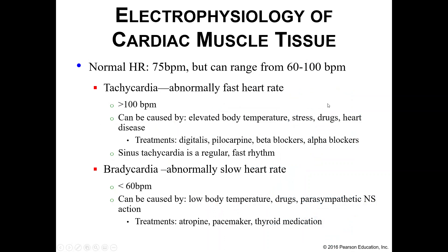Normal heart rate is approximately 70 to 75 beats per minute, though it can range from about 60 to 100. If you get above 100 beats per minute, you are experiencing tachycardia — a really fast heart rate. Causes include elevated body temperature, stress, sympathetic nervous system activation, certain drugs both legal and less legal, and heart disease. Medications such as digitalis, pilocarpine, beta blockers, and alpha blockers are designed to lower your heart rate. Sinus tachycardia is just a regular fast rhythm, and if it gets too bad, your doctor may prescribe medical treatment.